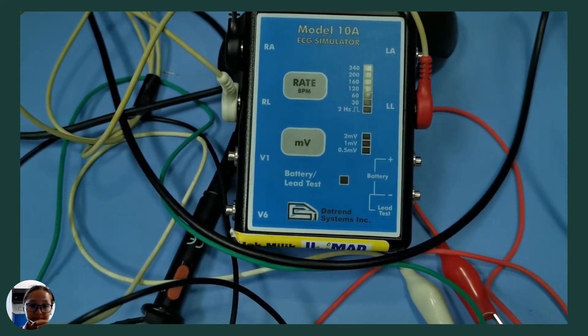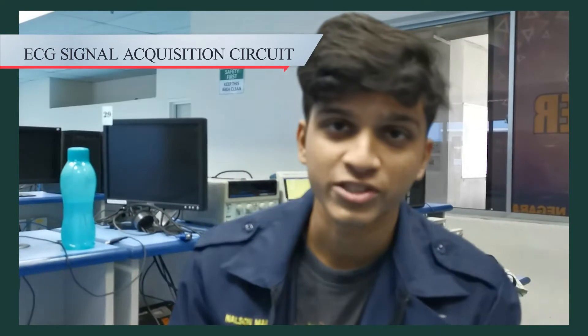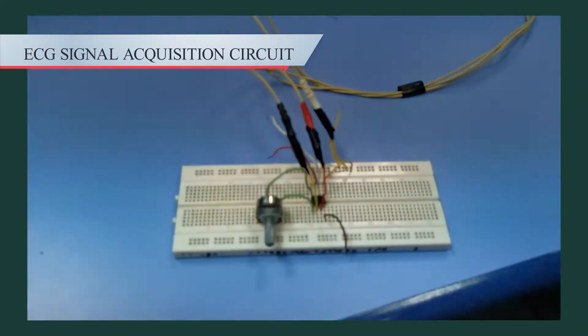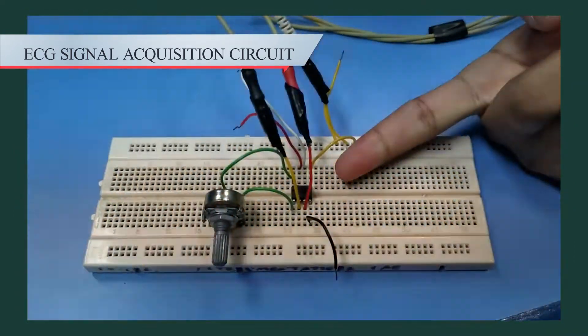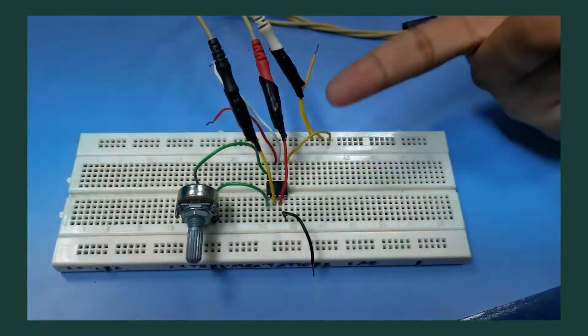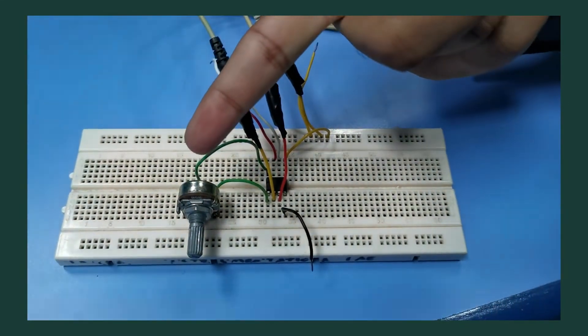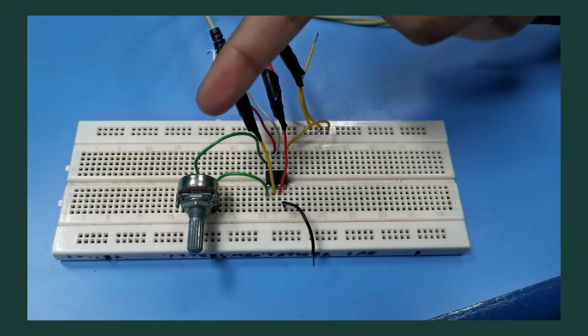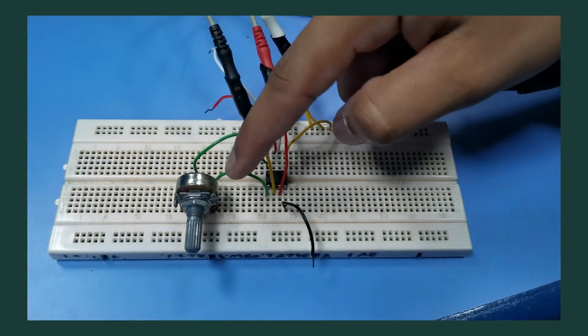Hi, my name is Nelson and I will explain the ECG signal acquisition circuit. As you can see here, we are using AD620 as the amplifier connected with a variable resistor which is a potentiometer — a 5K potentiometer at the input and output.